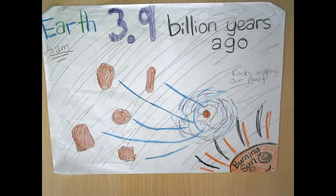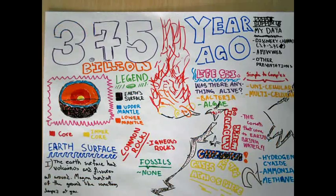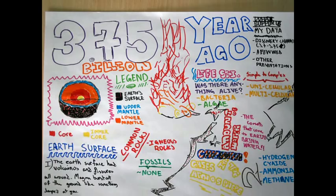3.9 billion years ago, at 4 a.m., the sun was really hot and this is when rocks were forming the planet. 3.75 billion years ago, the Earth's surface was covered with magma, volcanoes, and fissures. What were alive were just bacteria and algae. What covered the atmosphere were hydrogen, ammonia, and methane.